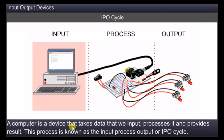A computer is a device that takes data as input. Input means entering the data into a computer system. Here, we are entering the data through a keyboard. Whatever data we enter and whatever instructions are given through the input devices like keyboard and mouse, that data is processed in the CPU, the central processing unit.